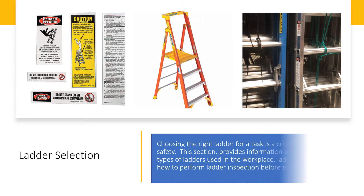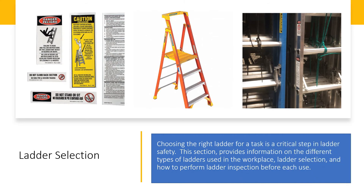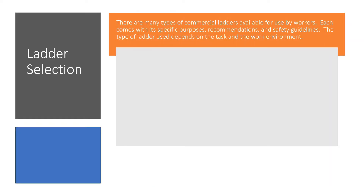Ladder selection: choosing the right ladder for a task is a critical step in ladder safety. This section provides information on the different types of ladders used in the workplace, ladder selection, and how to perform ladder inspection before each use. There are many types of commercial ladders available for use by workers. Each has its specific purposes, recommendations, and safety guidelines. The type of ladder used depends on the task and the work environment.